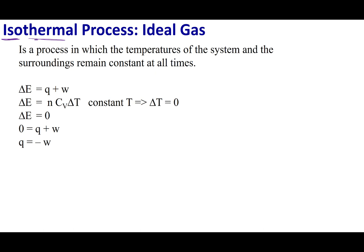If I look at internal energy, one equation for internal energy is N·Cv·ΔT. Now, if T is constant, that means the change in temperature is zero. Anything times zero is going to be zero, so for an isothermal process, ΔE is going to equal zero.